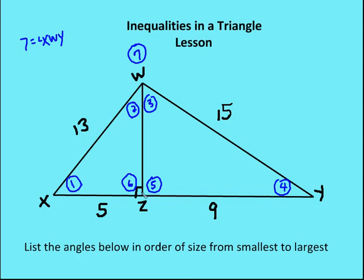The first thing we notice is that we have two right angles. If we have right angles — right triangles in this case — those are going to be the largest angles. And these two angles, five and six, as right angles, will therefore be the largest angles of all the angles, except possibly angle X, W, Y. So let's just say that five is equal to six, and those are going to be the two largest angles.